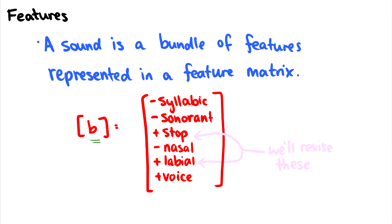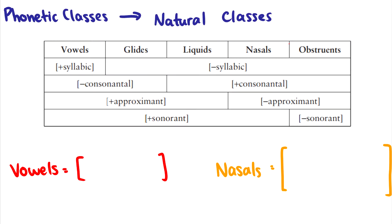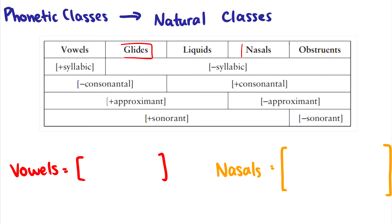Essentially what we're going to do is take these phonetic classes and phonetic descriptions and turn them into natural classes. Here I already have five natural classes listed: vowels, glides, liquids, nasals, and obstruents. Obstruents would be things like stops, fricatives, and affricates — essentially everything that's not listed as vowels, glides, liquids, and nasals.